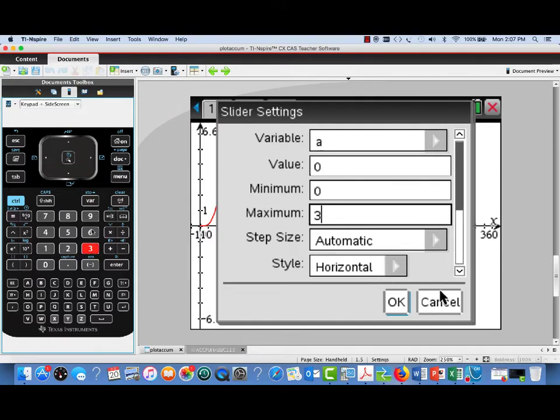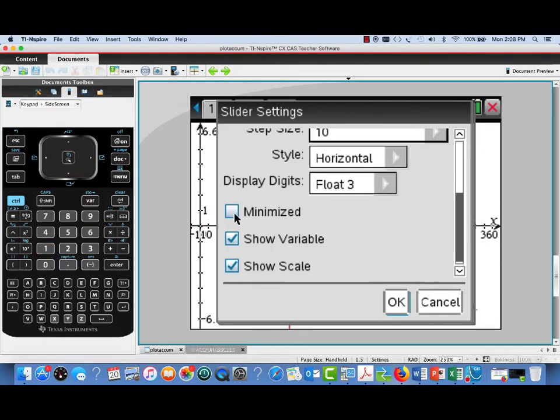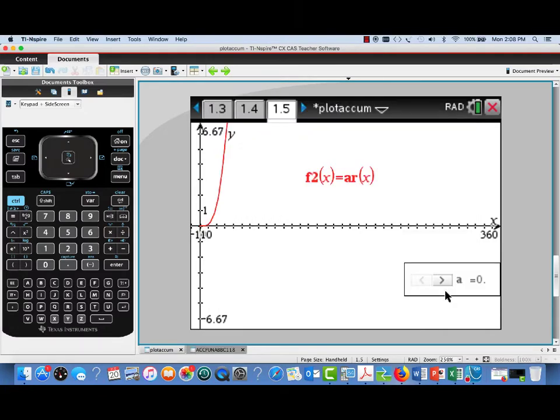And I'll also make the step size on the slider match up with those hash marks along the horizontal axis. So we'll make the step size 10. And we'll make it a minimize slider so it'll be just actually a clicker and there we're set to go.